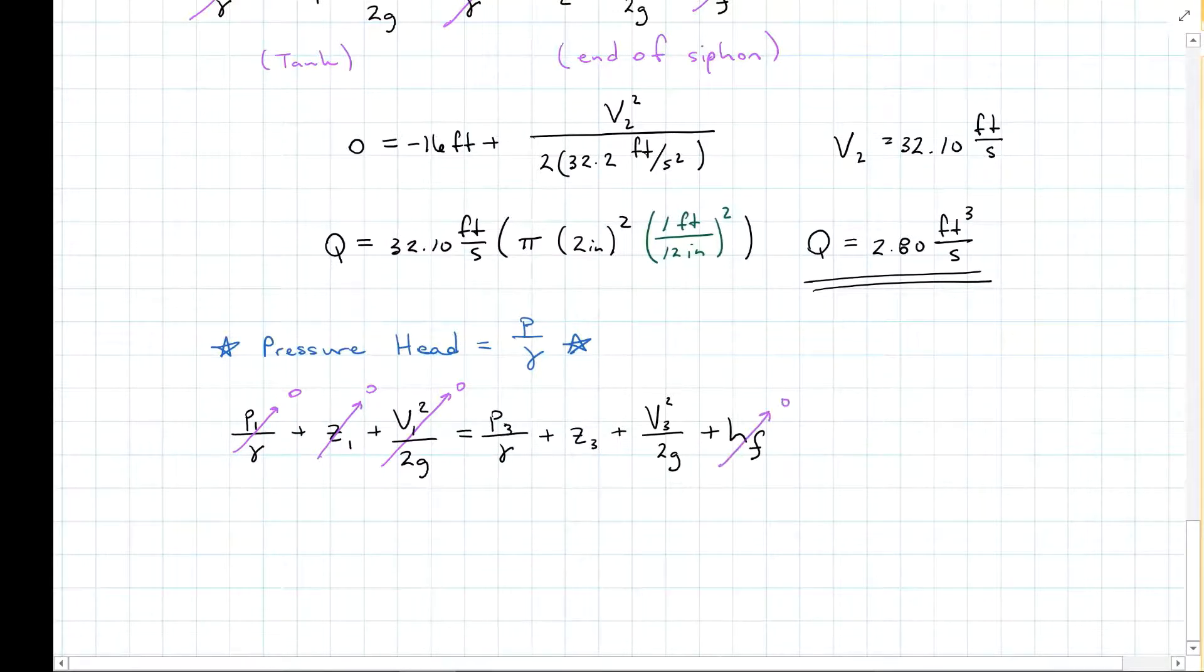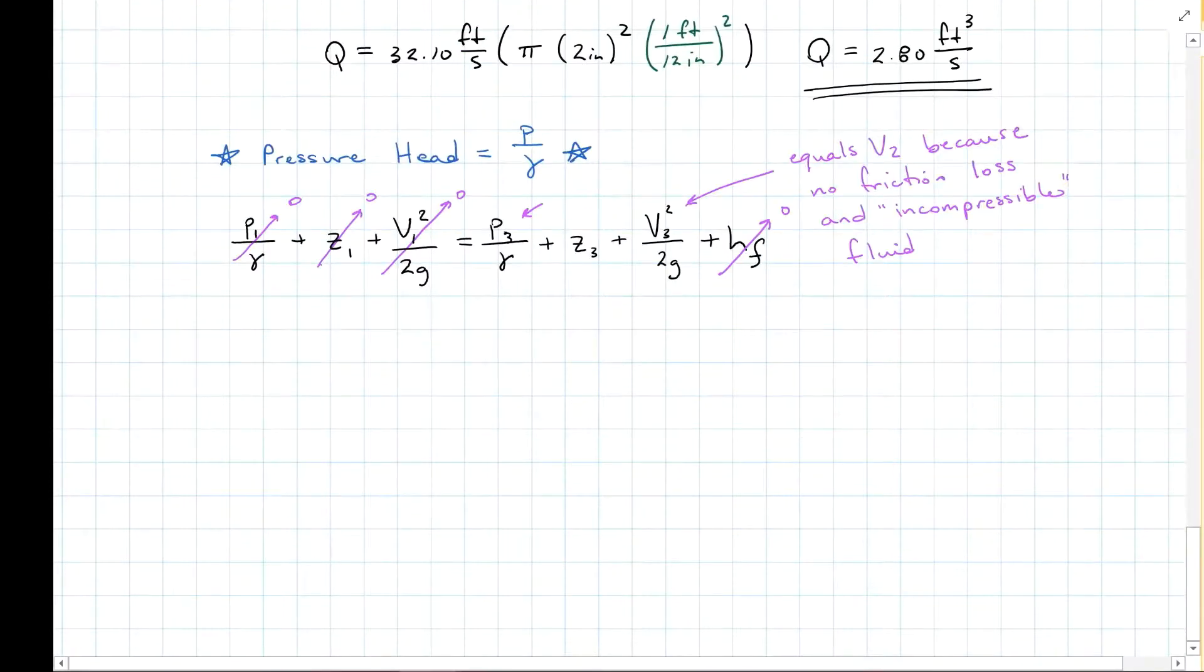We have a frictionless pipe, so we don't have any loss due to friction. We are looking for the pressure head, which is P3 over gamma, and because the pipe diameter is consistent and we have an incompressible fluid with no loss of friction due to the pipe, our velocity head for 3 is going to be the same as our velocity head for 2. So solving for our head at B, which is P3 over gamma, we're going to have minus Z3, moving it to the other side of the equation.